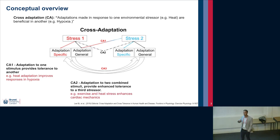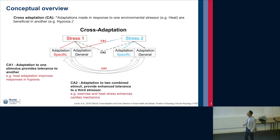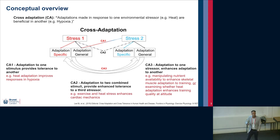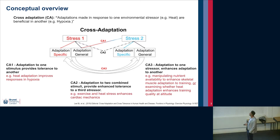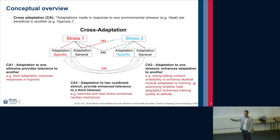We can also combine stresses — heat and exercise together — to enhance tolerance to a third stressor, and in this presentation that will look like improvements in cardiac stability and cardiac efficiency. There's also an under-researched area, probably for logistical reasons, which is adaptations to one stressor enhancing adaptations to another. For example, whether being heat adapted improves our ability to train with quality at altitude. Anyone working with athletes knows that the first week of an altitude camp often involves easy training — maybe that's inefficient — so perhaps heat adapting them beforehand helps stabilise their physiology so they can exercise hard.